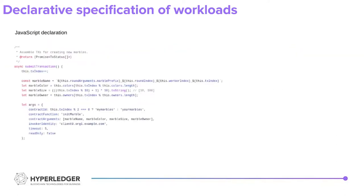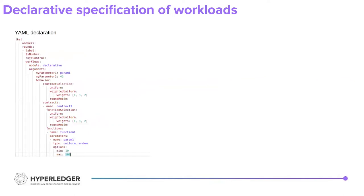Coming to how a declarative specification differs from one written in code: currently the workload modules have to be written in JavaScript, and this is how a part of the workload module looks. All the relevant parameters are initialized, then there's a contract function that is declared, and all of this information is sent through to the system under test. This is only a small fraction of what the workload module looks like — there are also Caliper's own internal parameters and user-defined parameters that have to be modified or passed into the transaction, so this can get quite detailed. A declarative specification was our idea of implementing a simpler solution.